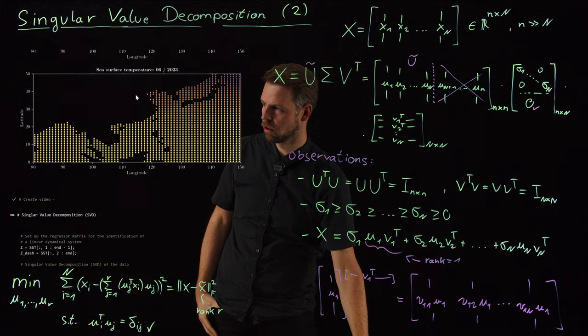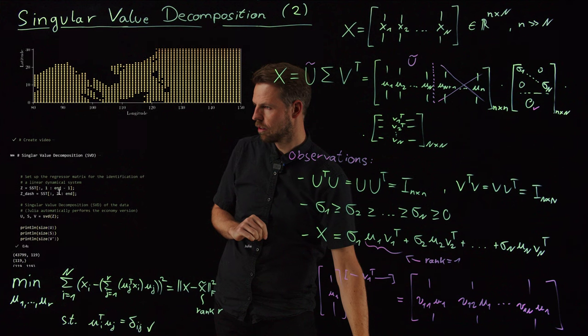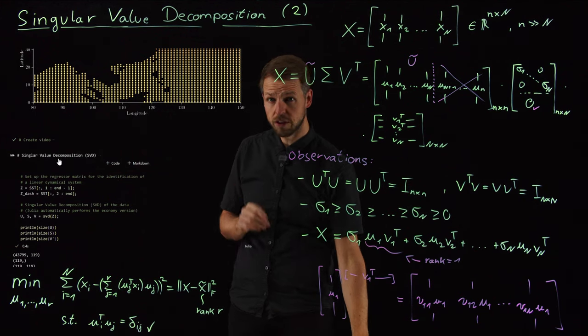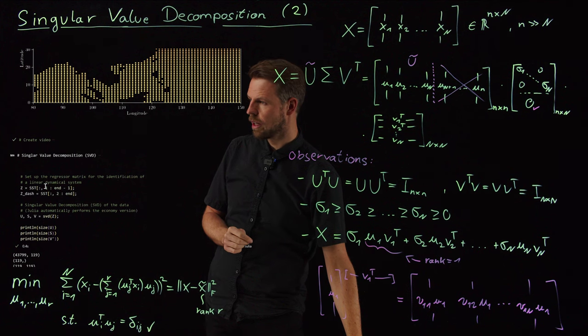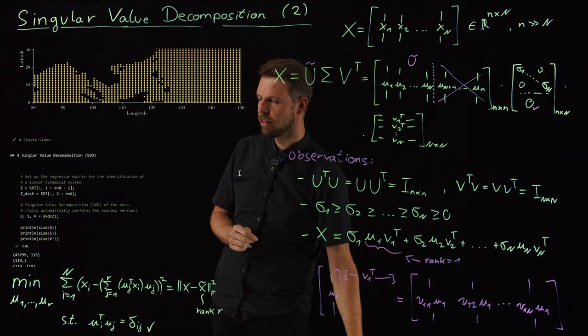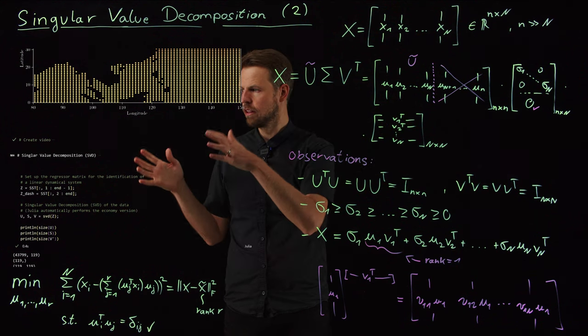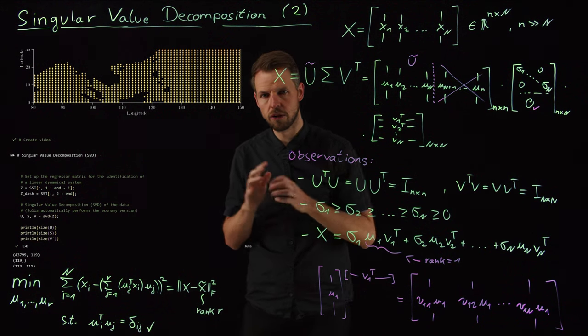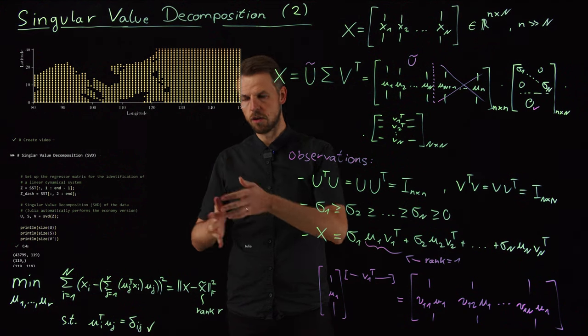So here, these abbreviations, or these zoom ins, and here is what we're going to do. This is the singular value decomposition. We are first extracting our regressor matrix Z. As we have seen in the linear system identification, so it's the sea surface temperature, and these are the leading 119 snapshots in time. So the big N minus one, and the Z dash is one step ahead. We will need this later on for further algorithms, but the Z is, for now, our regressor matrix containing the states at the current time step.